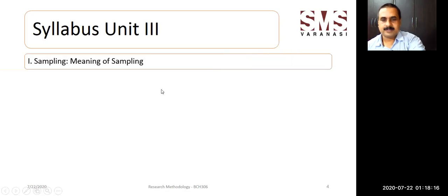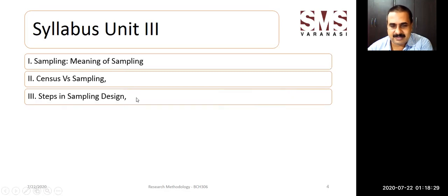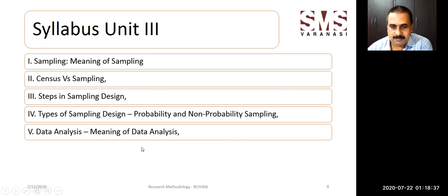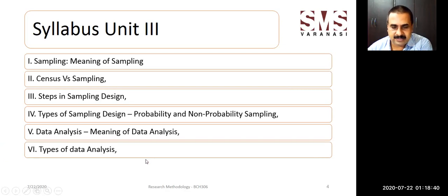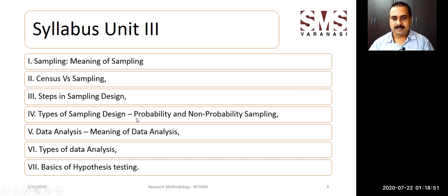In unit three we cover sampling. Most topics under this unit are very important for examination. The key topics are: meaning of sampling, census versus sampling, steps in sampling design, types of sampling design including probability and non-probability sampling, data analysis, meaning of data analysis, types of data analysis, and basic hypothesis testing. The most important topic — where long answer type questions are expected — is probability and non-probability sampling, as this question is asked every year.